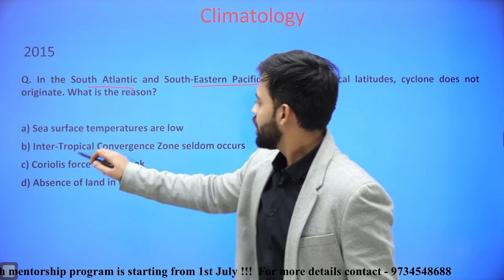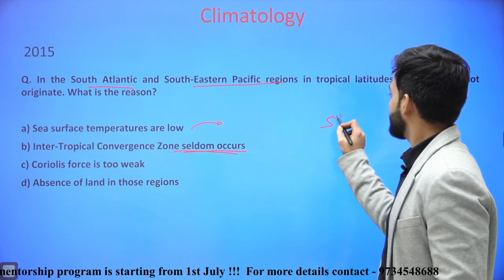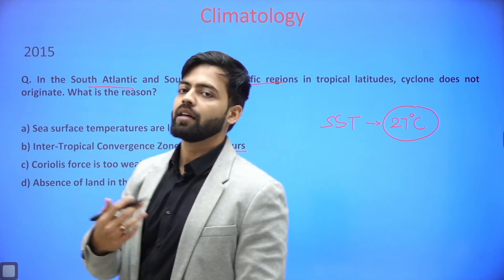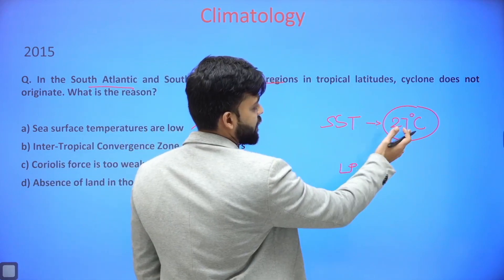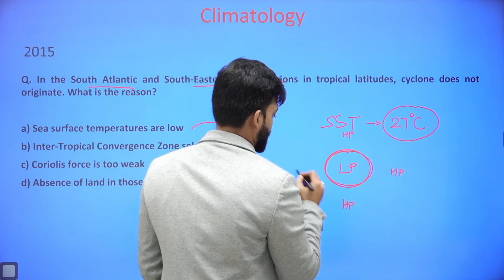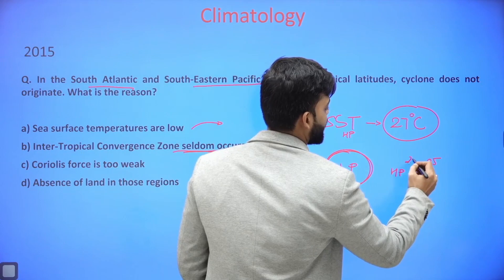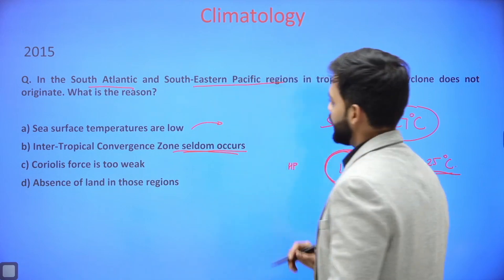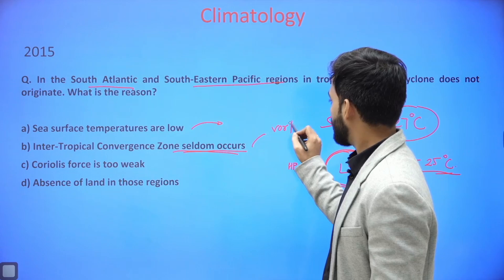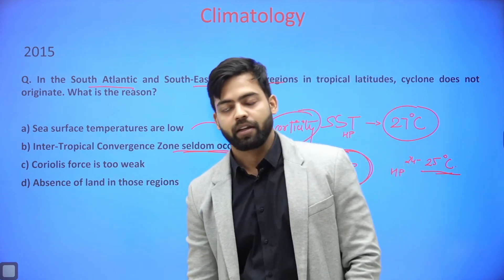The prime reason is that the Intertropical Convergence Zone seldom occurs in these regions. Additionally, sea surface temperatures are low — the requirement is around 27 degrees Celsius for a low pressure system to form, but in the southern hemisphere the sea surface temperature is comparatively low at around 25 degrees Celsius. However, the prime reason remains that the ITCZ seldom occurs, leading to lack of vorticity and the absence of tropical cyclones in the southern hemisphere. Thank you.